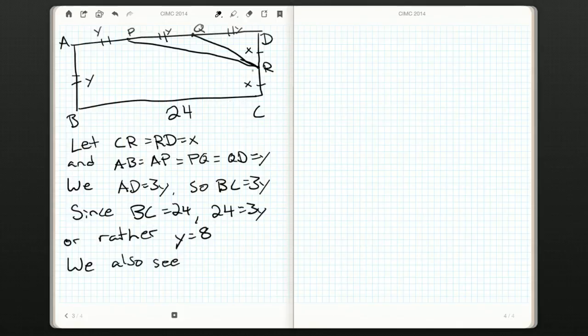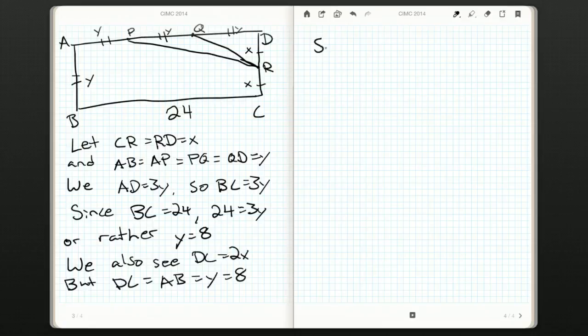Now we know that R splits DC in half. Being a rectangle, DC is equal to AB, which we know is equal to Y, which is equal to 8. So 2X equals 8. We can divide by 2 and figure out that X is just equal to 4.